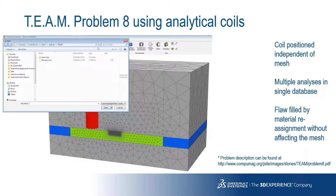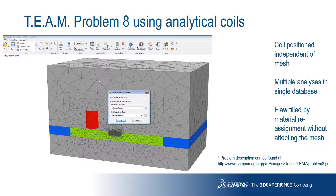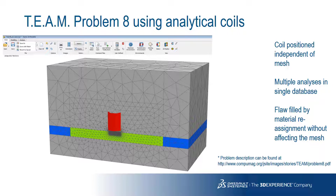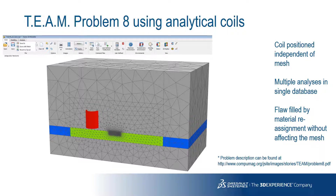Here we can see how the analysis database is prepared for TEAM problem 8. We're running a script in Opera which places the coil at each of the positions defined in the TEAM problem 8 specification. Because the analytical coil is independent of the mesh, the mesh doesn't change as the coil is repositioned, which is a requirement if we want to eliminate mesh discretization errors for the most accurate results. We can create a number of solution cases in a single database, generating one database for the plate with a flaw and then reassigning materials to create a second database for the plate without a flaw.